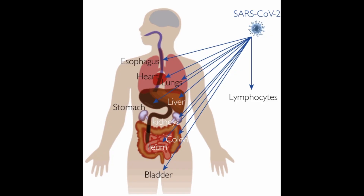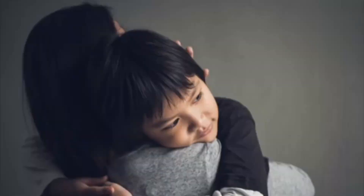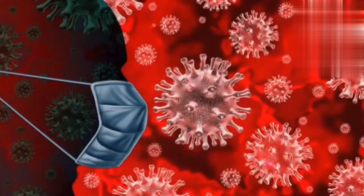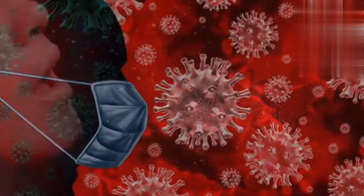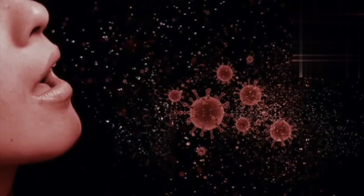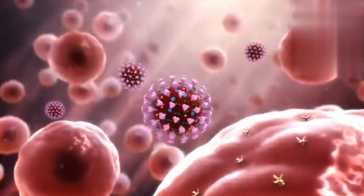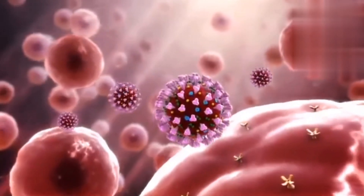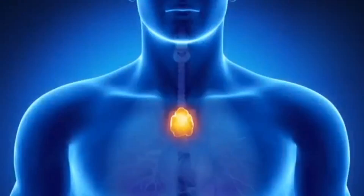Where in the body is ACE2 found? ACE2 is present in many cell types and tissues, including the lungs, heart, blood vessels, kidneys, liver, and gastrointestinal tract. It is present in the epithelial cells, which line certain tissues and create protective barriers. The exchange of oxygen and carbon dioxide between the lungs and blood vessels occurs across this epithelial lining.